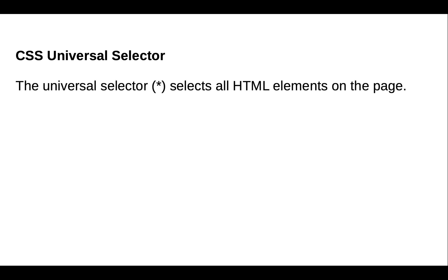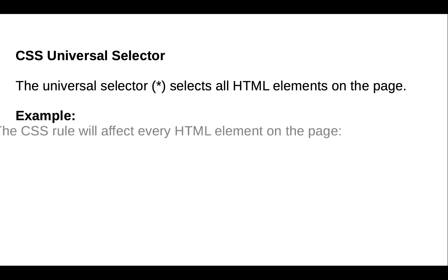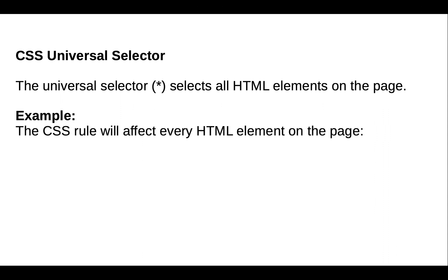Next is the CSS universal selector. The universal selector selects all elements on the page. The CSS rule will affect every HTML element on the page. We use the star character for the universal selector and add the property and its value inside.